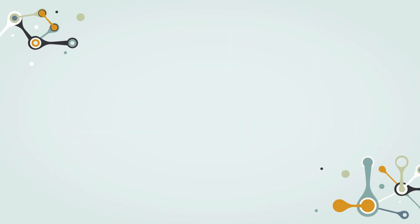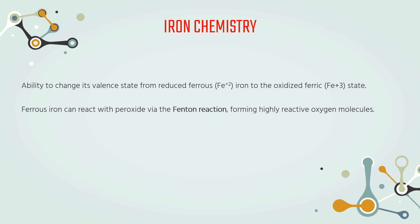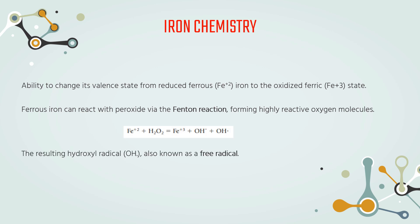To understand iron kinetics you have to know iron chemistry. The metabolic functions of iron depend on its ability to change its valence state from reduced ferrous iron to the oxidized ferric state, thus it is involved in oxidation and reduction reactions such as the electron transport within mitochondrial cytochromes. In cells, ferrous iron can react with peroxide via the Fenton reaction, forming highly reactive oxygen molecules. The resulting hydroxyl radical, also known as a free radical, is especially reactive as a short-lived but potent oxidizing agent, able to damage proteins, lipids, and nucleic acids.